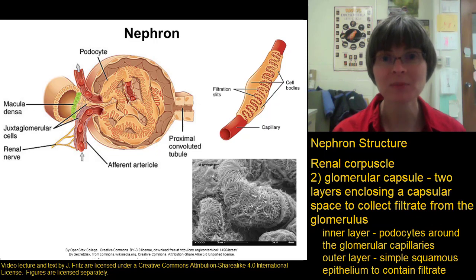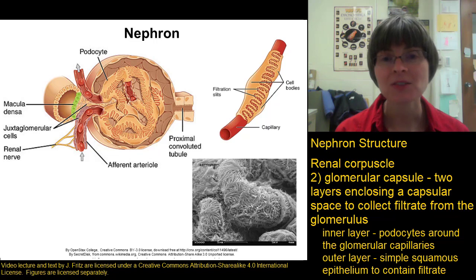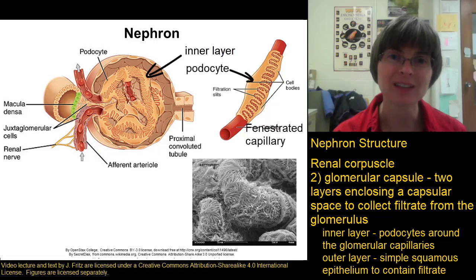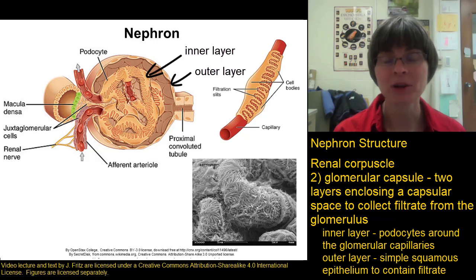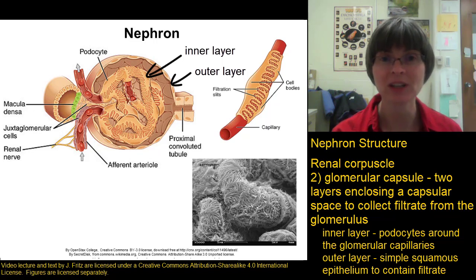The glomerular capsule is made of two layers with a space in between. The inner layer is right on the surface of the glomerular capillaries and is made of cells called podocytes, which have extensions that go out and wrap around the capillaries. The outer layer of the glomerular capsule is a layer of simple squamous epithelium — a single layer of flat cells — and it helps enclose the capsular space, which is where the filtrate from the glomerulus actually collects.